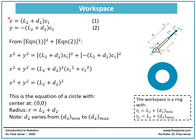For the workspace, we take the two equations from the inverse kinematics, square equation one and add it to the square of equation two. We get x squared plus y squared, with the common factor L2 plus d2 squared. Applying the trigonometric identity that sine squared theta 1 plus cosine squared theta 1 equals 1, this gives a resulting relationship between x squared and y squared.